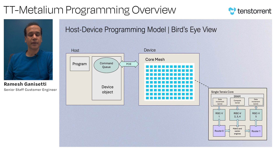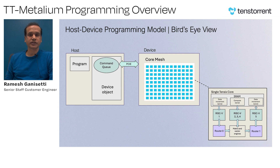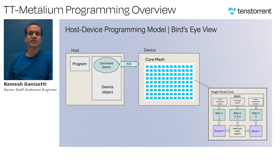This SRAM can hold the data as well as the kernel code that is supposed to execute. Each Tensix core has five RISC-V cores. Two of them, RISC-V1 and RISC-V5, execute the data movement kernels, while the other RISC-V cores, RISC-V2, 3, and 4, execute the compute kernel in collaboration with the matrix and the vector engines.